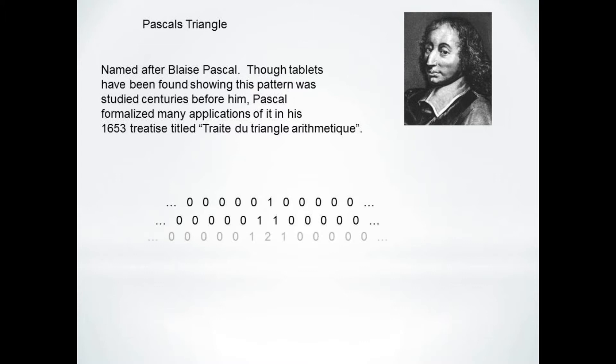If we do this again, the non-zero terms are 1, 2, 1. We usually don't bother to list the zeros, so the next row is 1, 3, 3, 1, and so on.